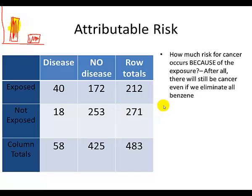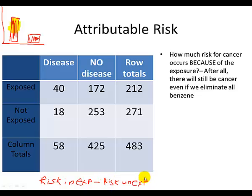So the calculation is: the risk in the exposed minus the risk in the unexposed, all divided by that total column — which is the risk in the exposed group.